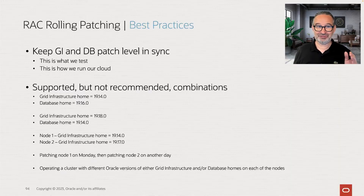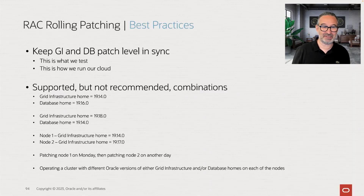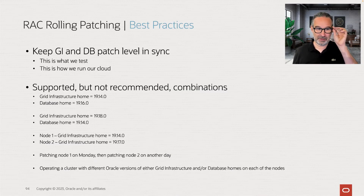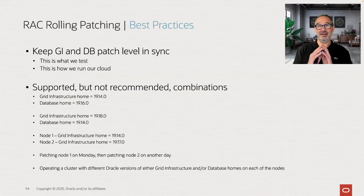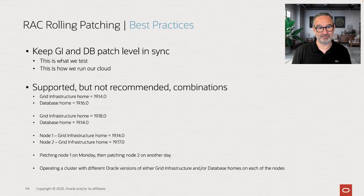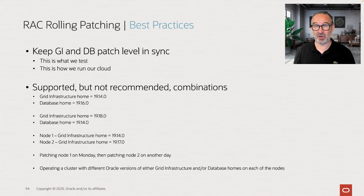You could also have grid infrastructure 19.14 on node one and GI home 19.17 on node two, and the same for the database. But please don't do that. You could also say let me patch node one on Monday, node two on Tuesday, node three on Wednesday, and node four on Thursday and Friday — happily ready for the weekend. Don't do this. You can operate a cluster with different Oracle versions of either GI or database on each node; it's technically possible. But you should not do that.